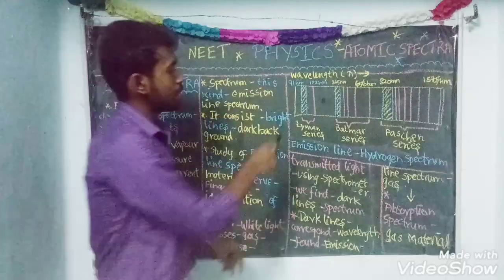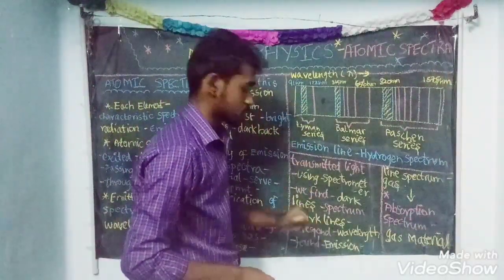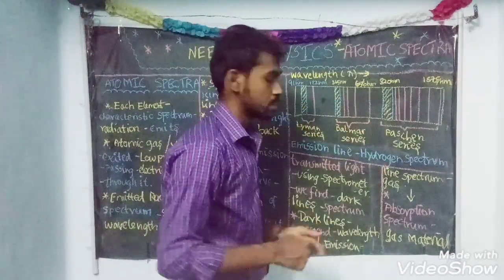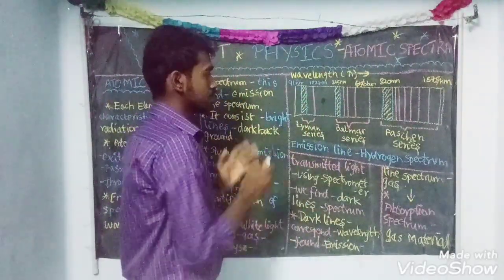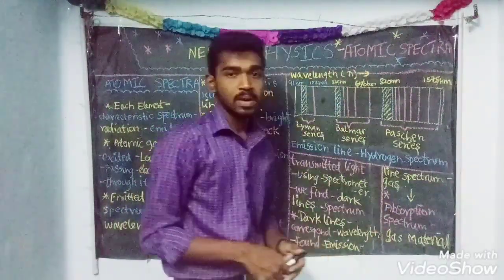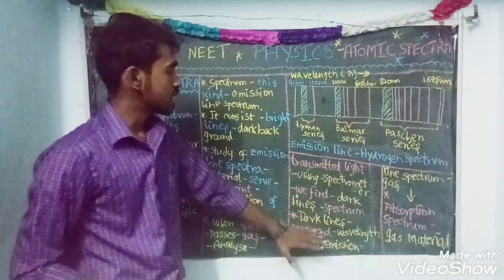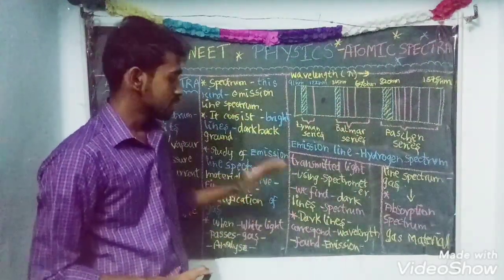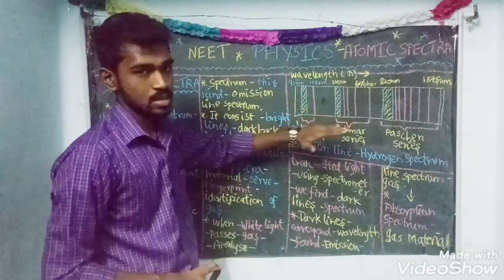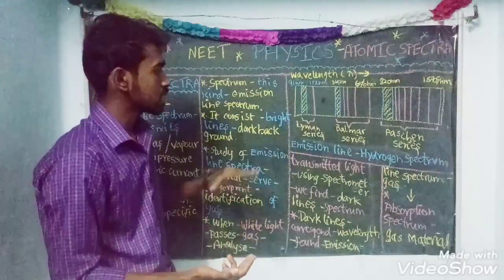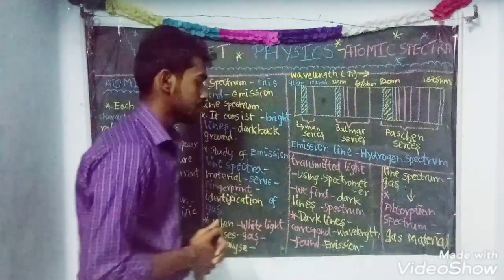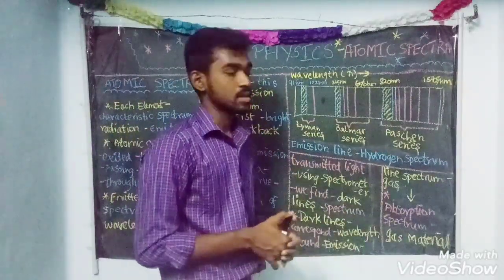These are the emission spectra of gas. This is called the absorption spectrum of gas material. This is the emission spectrum of gas material.